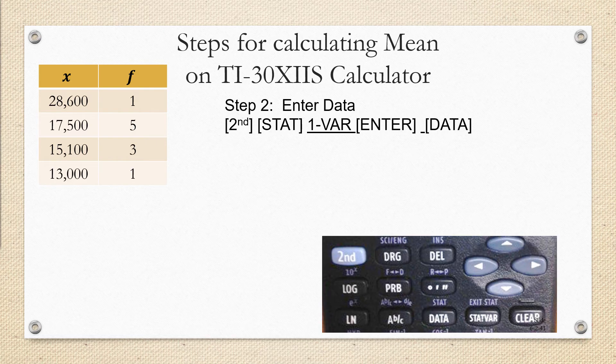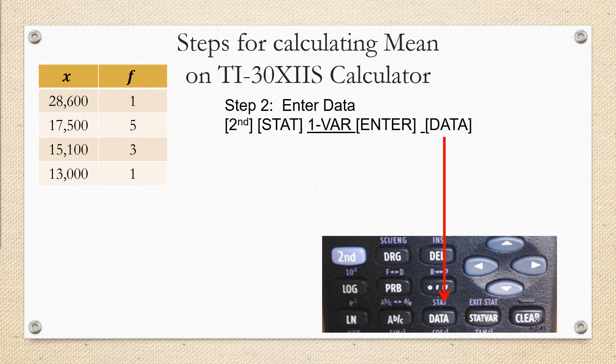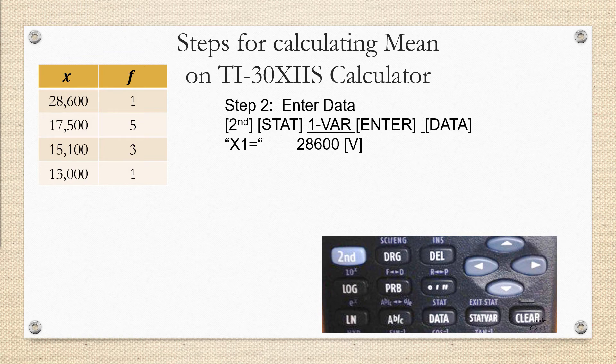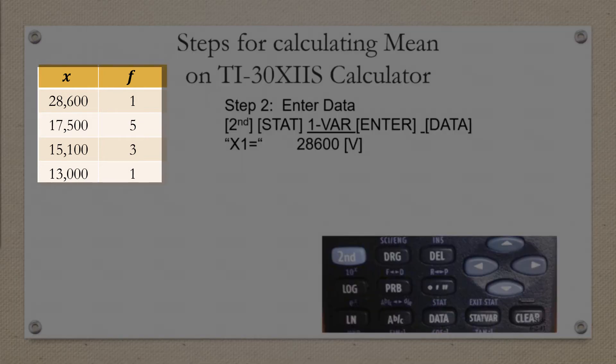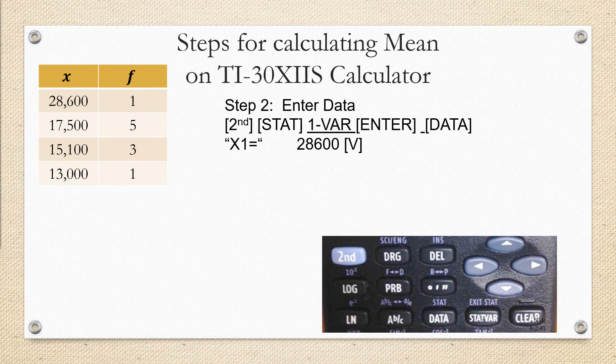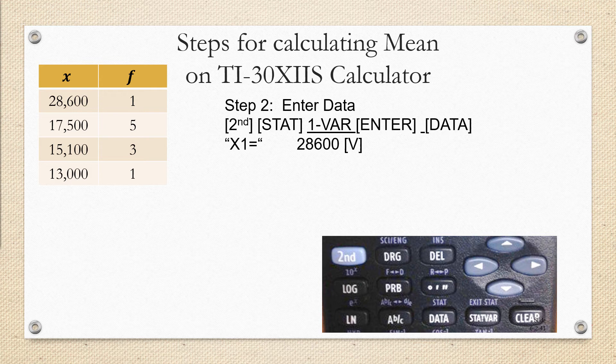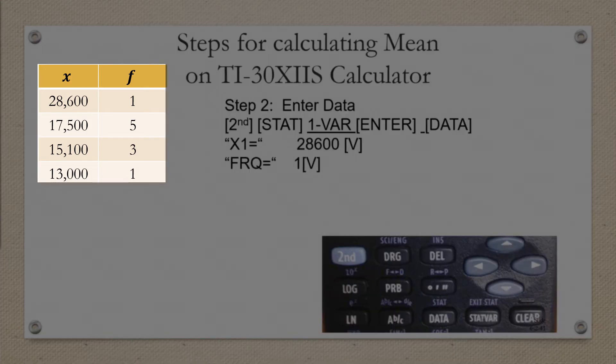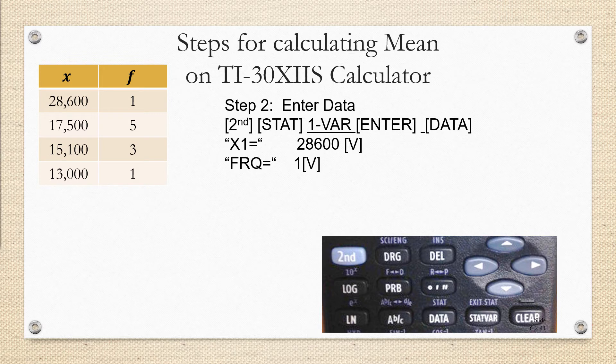Now that you're in stat mode, you can collect your data. And so you do that by just hitting the data button. When you hit the data button, you're going to be asked for the first data value x1. So looking at our frequency distribution, x1 is 28,600. When you finish typing that, don't hit enter. Instead, you arrow down. When you arrow down, you're going to be asked for the frequency of this data value. Looking back at our frequency distribution, it has a frequency of 1. The calculator will already have a 1 there, so you don't have to type 1. You can just arrow down again.